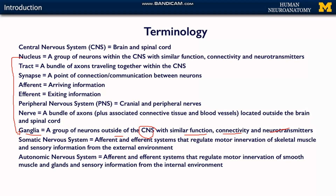There is another term used in neuroanatomy which is 'tract.' A tract is a bundle of axons traveling together within the CNS. Similarly, 'nerve' is also a bundle of axons, but located outside the brain and spinal cord — that is, outside the CNS. When an axon bundle is inside the CNS, we call it a tract; outside the CNS, we call it a nerve.